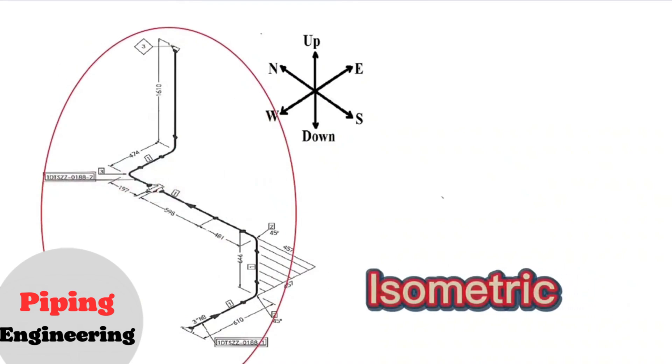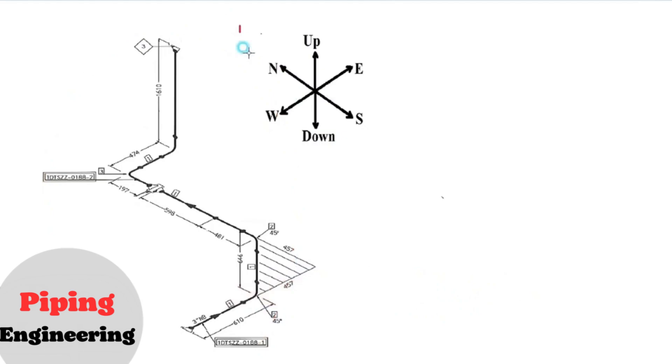This is pipe isometric drawing. Every pipe drawing has such a sketch, this indicates the directions. There are six directions here.